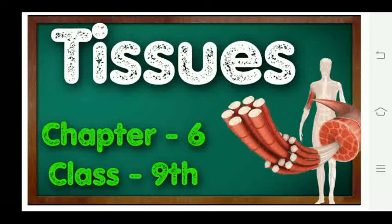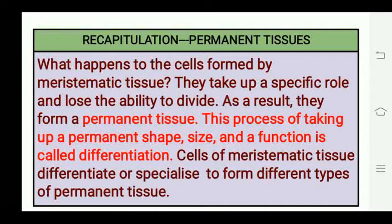Good morning students, welcome to your science class. Today we will discuss complex permanent tissues and special permanent tissues. These topics are given in lesson number six, that is Tissues. Let's recapitulate: when meristematic tissues take a specific shape, size, and function, they lose their ability to divide and form permanent tissues through a process called differentiation.